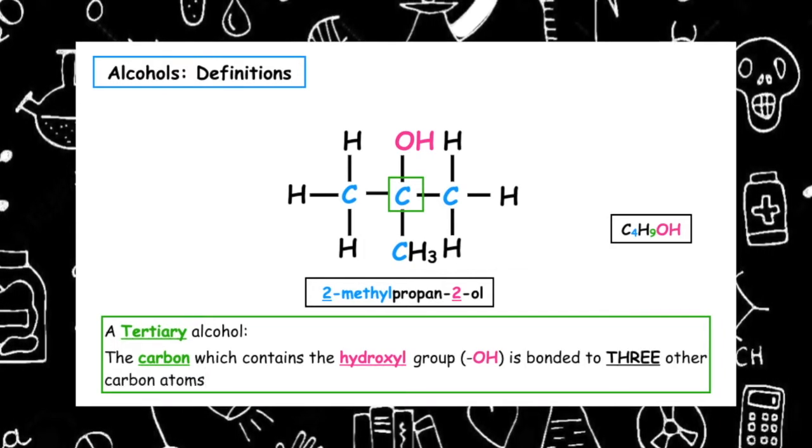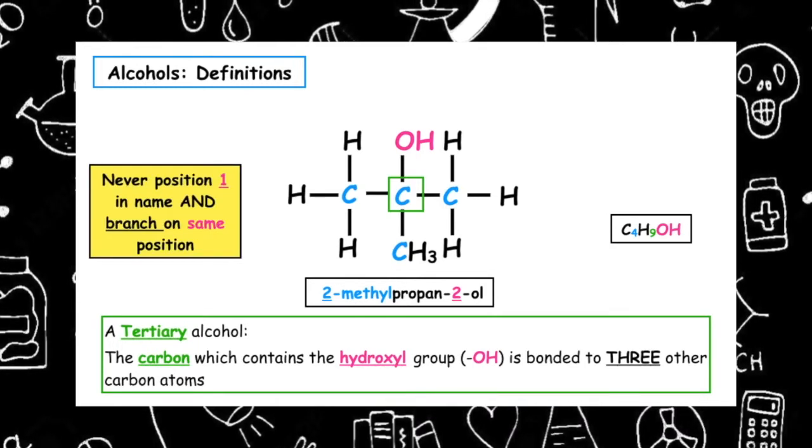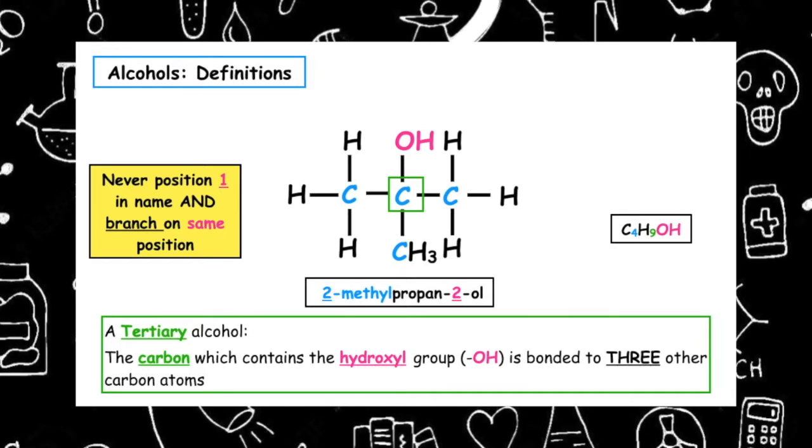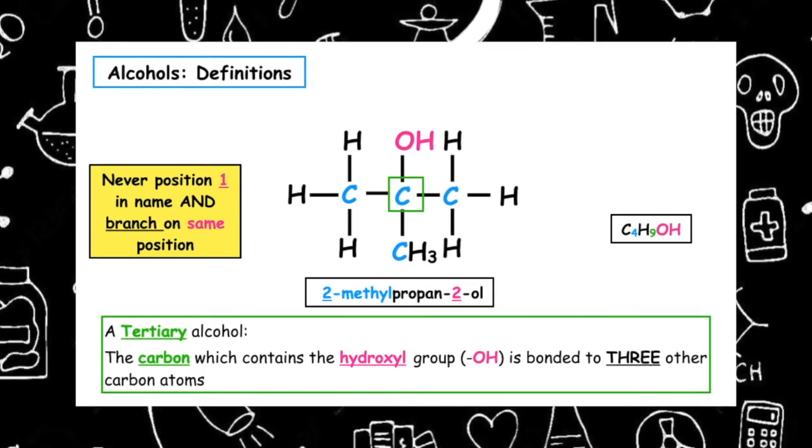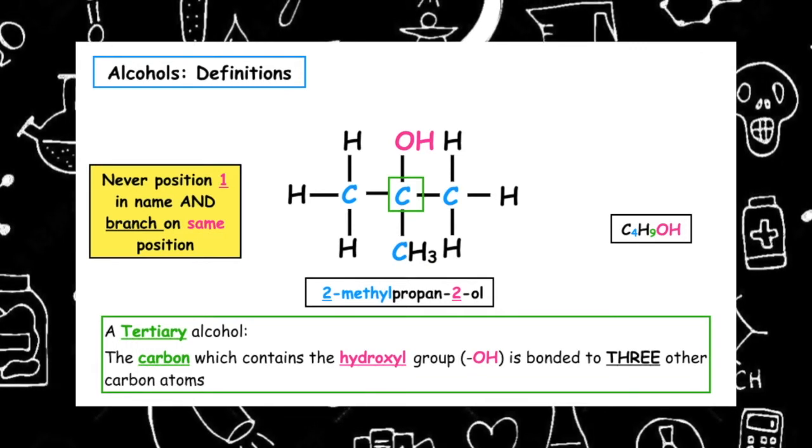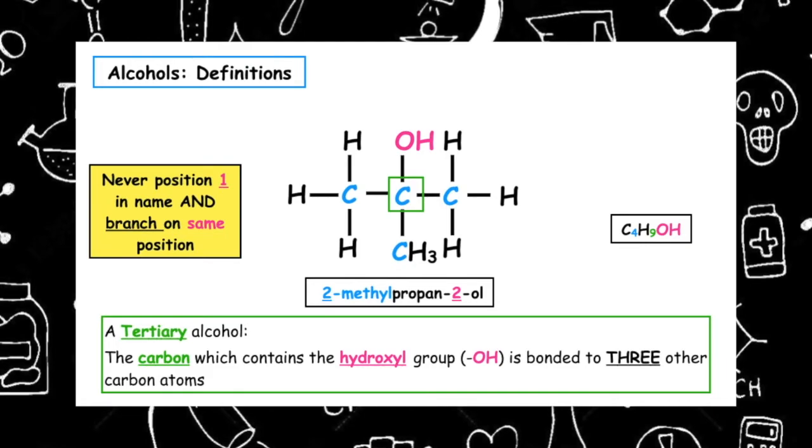To classify an alcohol from its name, we need to know that the hydroxyl group will never be on position one, but this time it must have a branch which is on the same position as the hydroxyl group. We can see here the hydroxyl group is on position two and the methyl branch is also on position two.